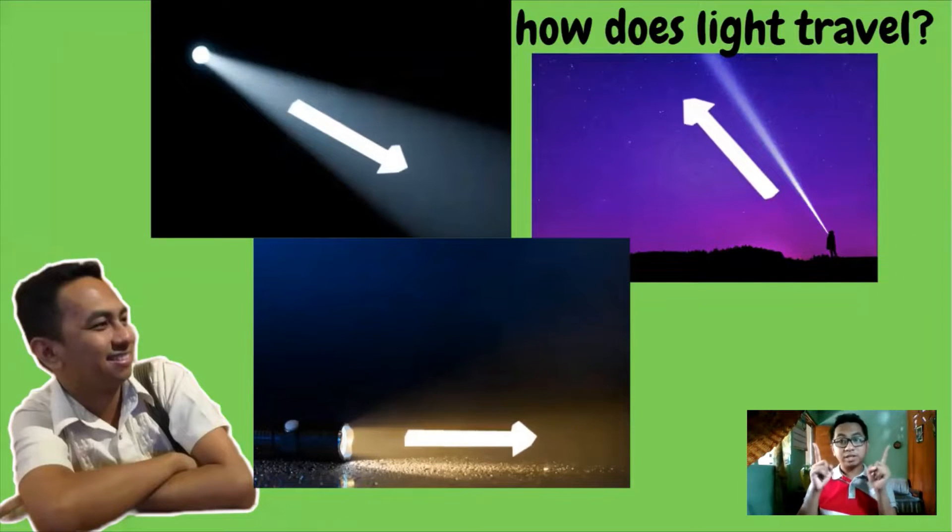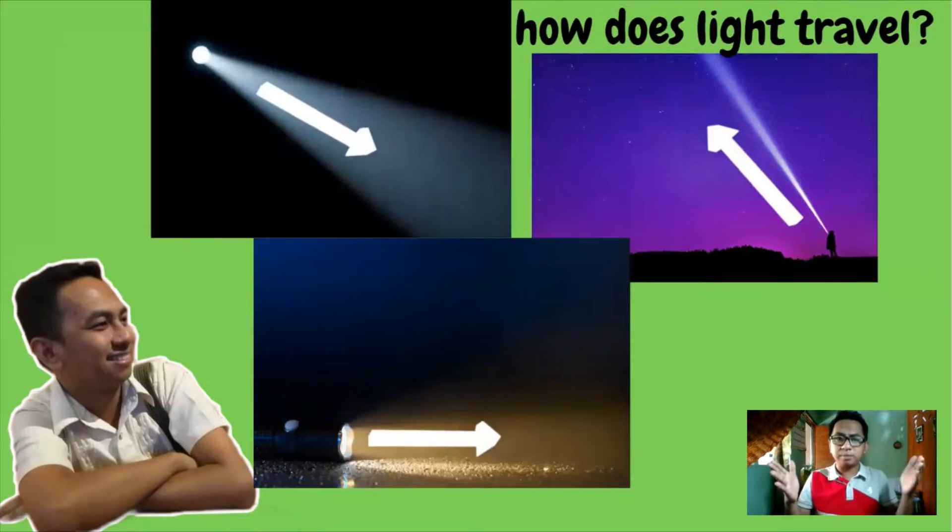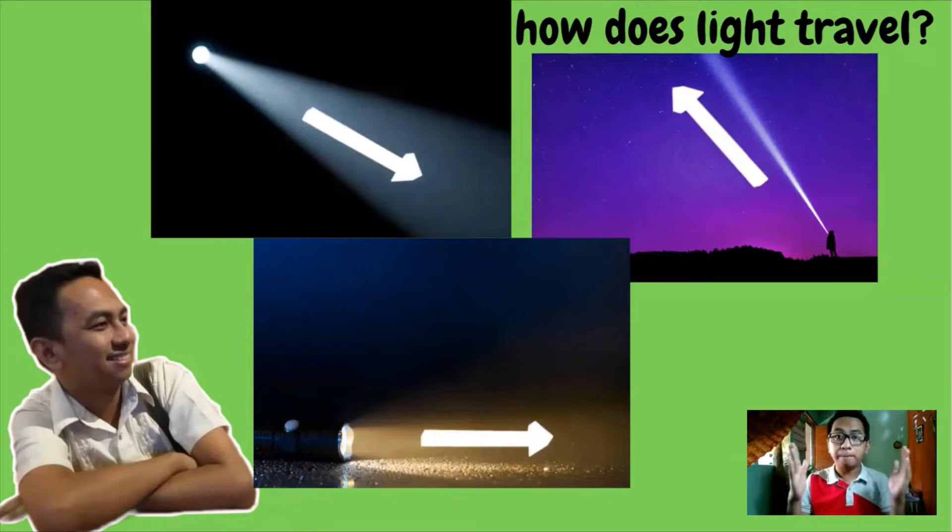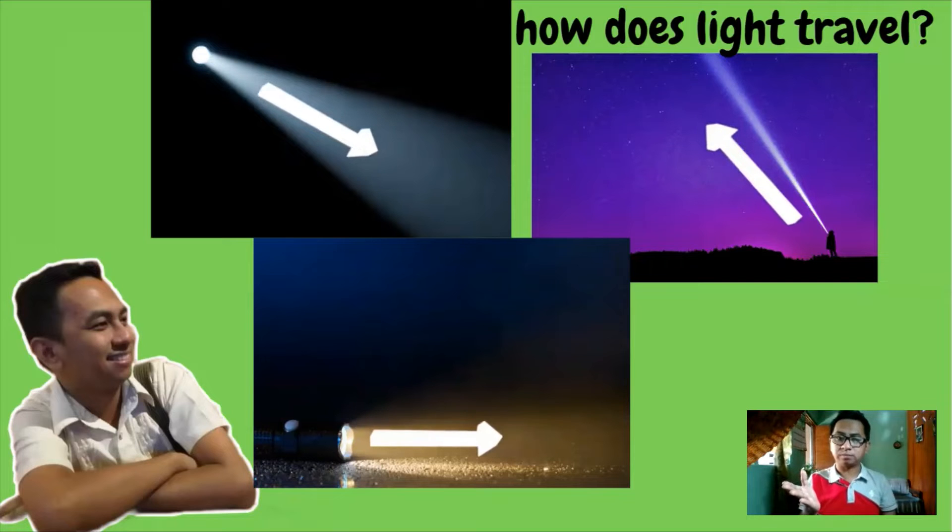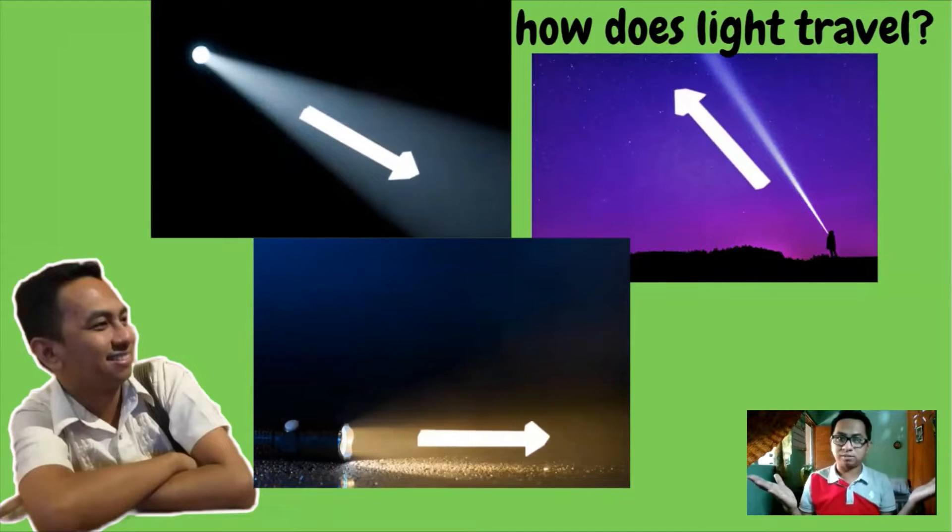Look and observe these pictures. When you light a flashlight, it forms a visible beam in the dark room or area with suspended dust particles. In what pattern does light travel? Is it in a curved line, spiral, or what? What do you think?